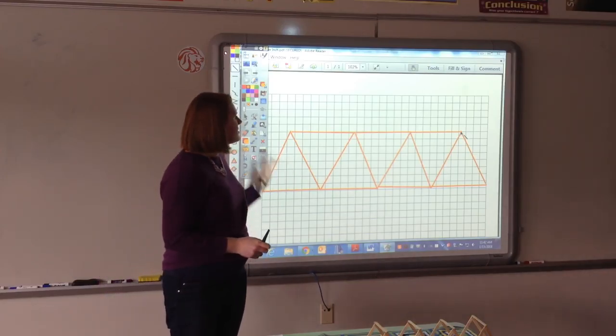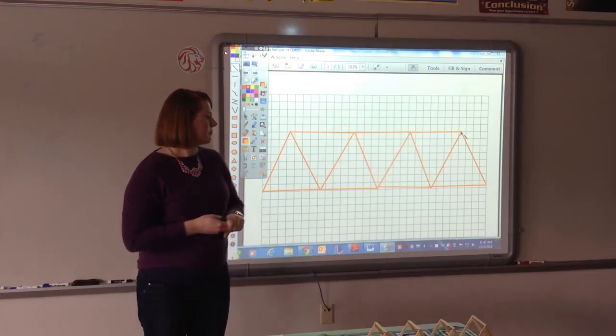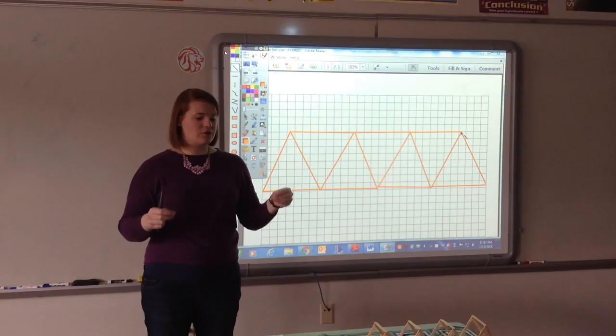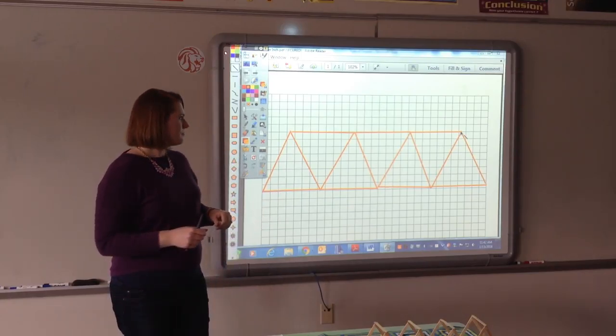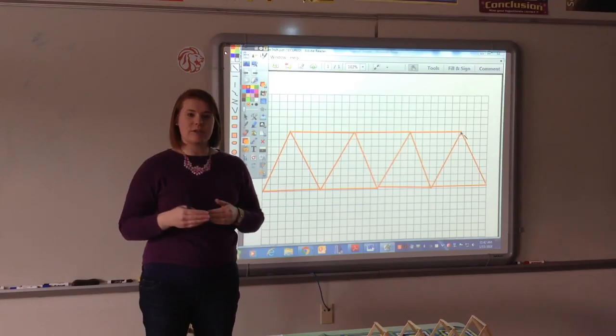So once you've got your popsicle sticks laid out, you're going to begin gluing. Once you've got them all glued together, you've got your two truss pieces all glued together, but somehow you need to attach them together to make your bridge.